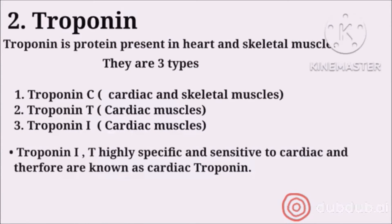There are three types of troponin: troponin C, troponin T, and troponin I. Troponin C is present in both skeletal muscles and heart muscles, whereas troponin T and troponin I are present only in the heart muscles, meaning they are specific for the heart. That is why we call them cardiac troponins. Whenever there is damage to the heart muscles, troponin comes out and enters the blood. For cardiac markers, we use troponin T and troponin I tests.